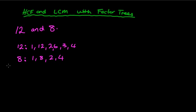When we talk about the HCF or the highest common factor, we're looking for the factor that occurs in both numbers but is the highest one. We notice that 1 is in both, 2 is in both, and 4 is in both. So the highest common factor in this case is 4, because 4 occurs in both and is the highest number.